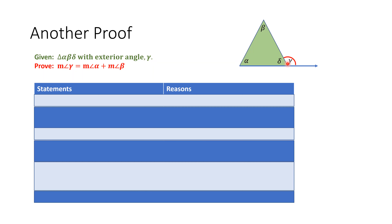If you notice carefully, angle gamma has actually been formed by extending the bottom side of the triangle out. Angle gamma being an exterior angle actually forms a linear pair with the adjacent angle, angle delta, which is one of the interior angles of our triangle.